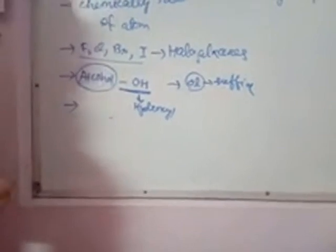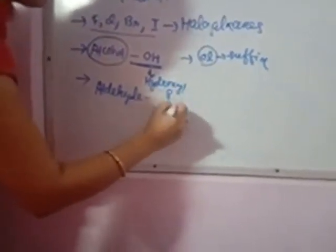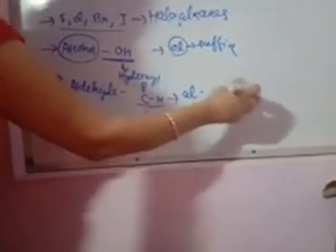Another functional group is the CHO group, which is called the aldehyde group. The representation of this group is: C double bond O, with H attached — this is your aldehyde group representation. The suffix for aldehyde compounds is -AL, so you can write methanal, ethanal, propanal, butanal. The suffix is -AL for the aldehyde group.